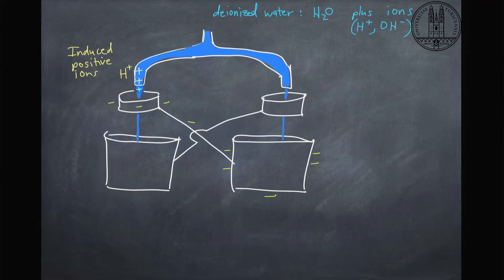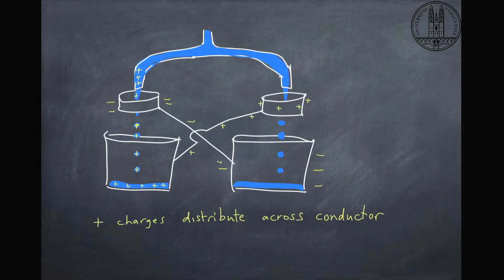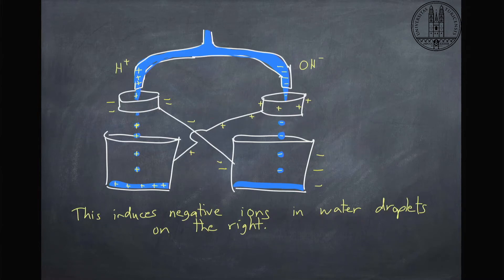So what would happen next is this positive charge will sort of drip down into the pail here. And it will charge up this pail. And this whole conductor is connected all the way over to this side over here, where you might kind of guess what would happen. We get OH minus ions that are attracted to these positive charges here. So we're going to get negative charges falling down here.